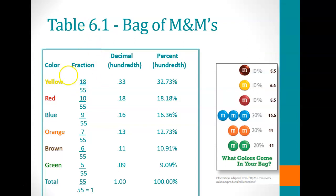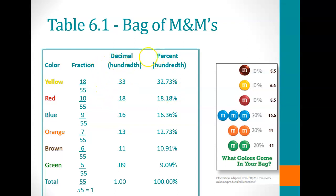To go from a fraction to a decimal, we divide 55 into 18, and that gives us 0.33 as a decimal, rounded to the nearest hundredth. To go from a decimal to a percentage, we move the decimal point two spaces to the right and add the percent sign, giving us 30.33%.